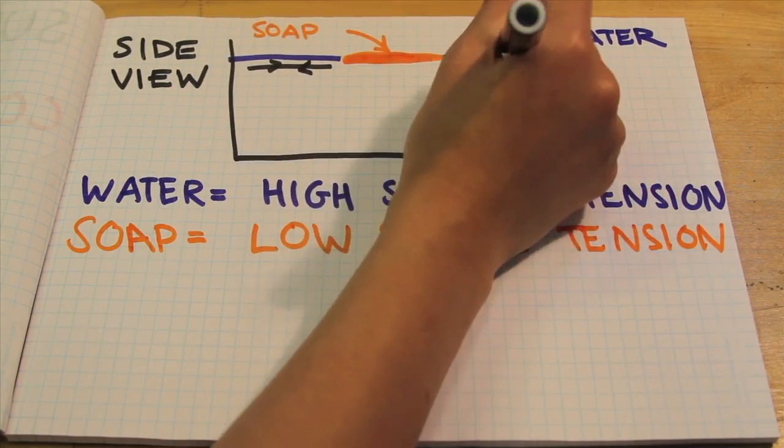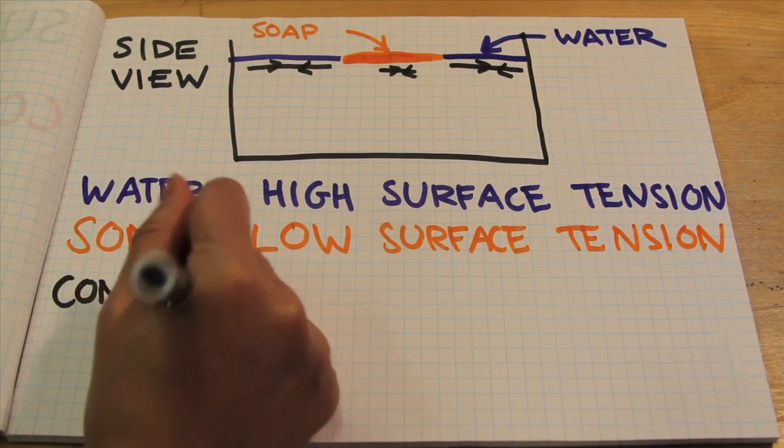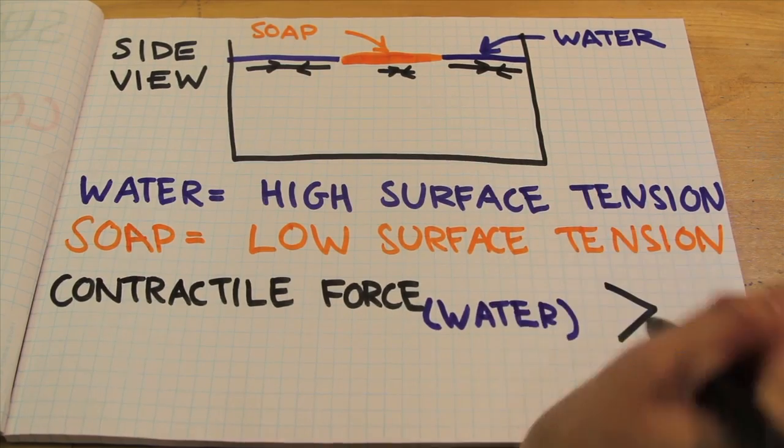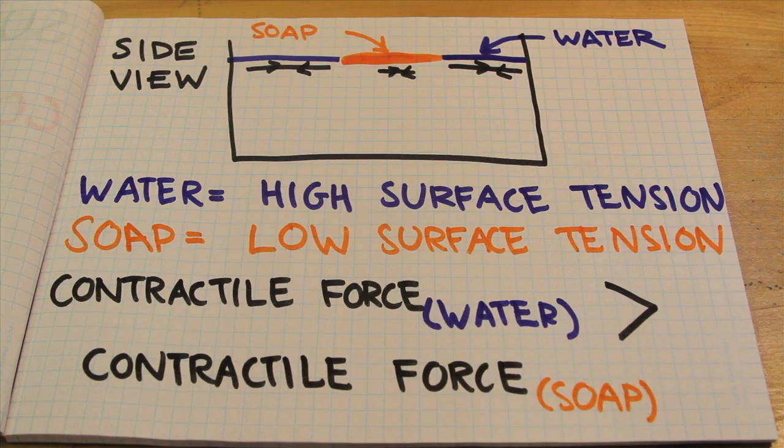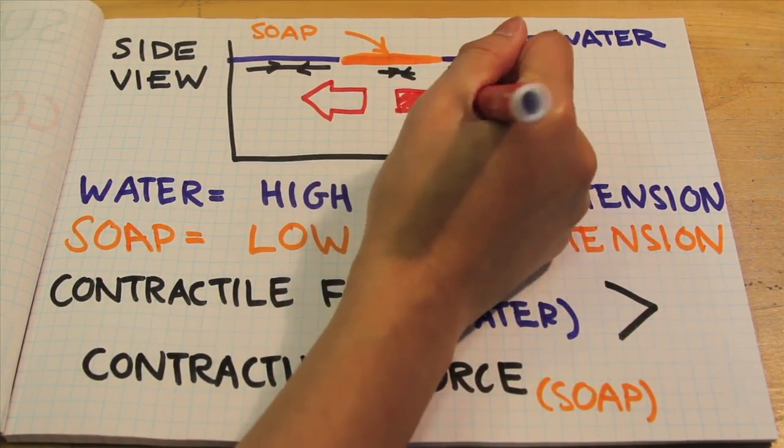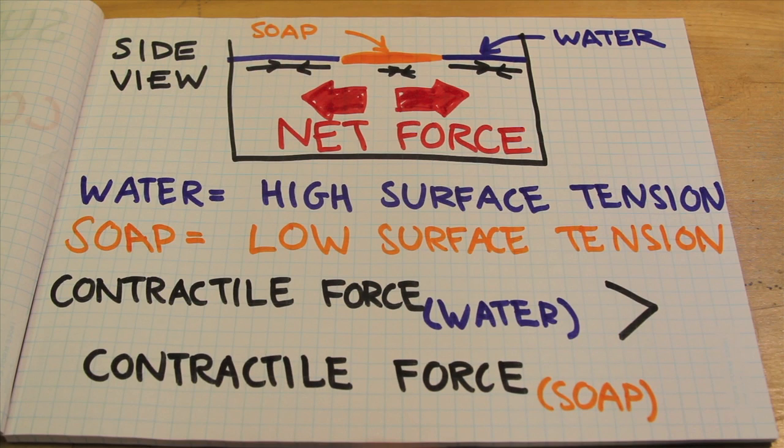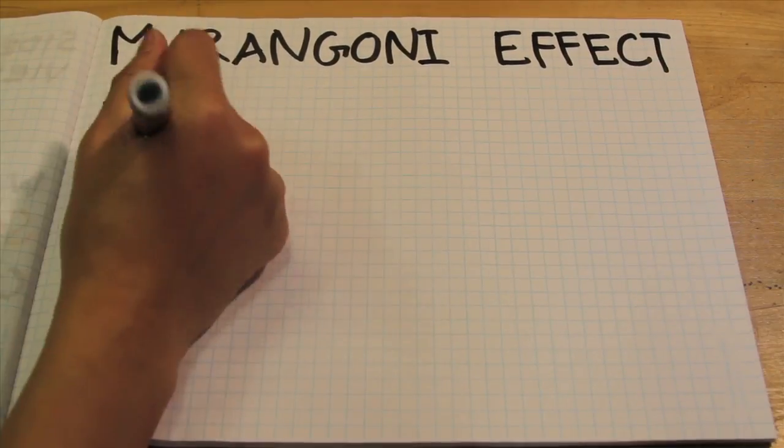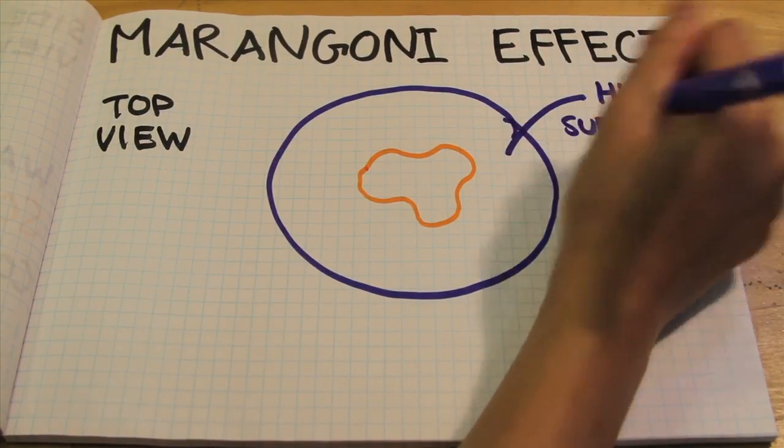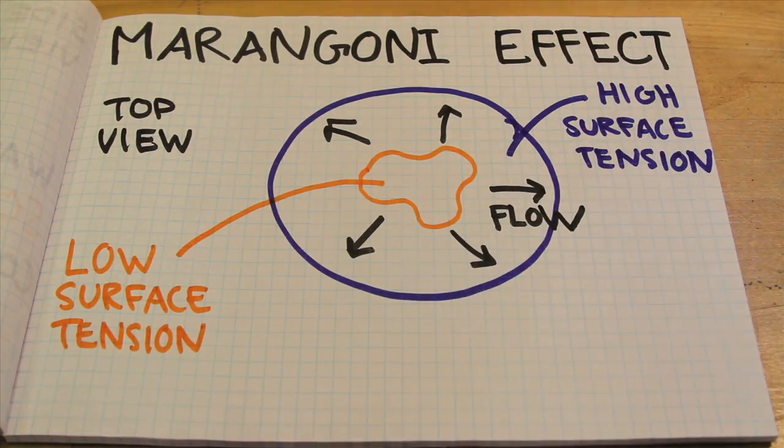For each liquid there's a contractile force on the surface, but since water has a higher surface tension than soap, the contractile force on the surface is bigger for water than it is for soap. In other words, water surface tension will pull more strongly than soap surface tension. This results in a net force from regions with low surface tension to regions with higher surface tension. This net force causes what is called the Marangoni effect. The Marangoni effect says that fluid will want to flow from areas of lower surface tension to areas of higher surface tension.